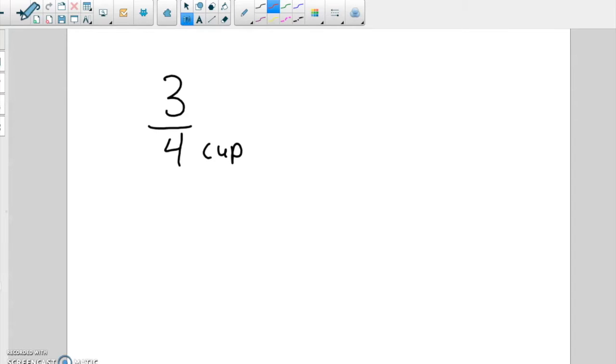Now, if a recipe calls for three-fourths of a cup of flour, and you want to half that, how are you going to find half of three-fourths? Well, you multiply it by one over two. And so what is half of three-fourths? You multiply straight across, and you would be putting in three-eighths of a cup of flour if you find half of the recipe. So as you can see, we're just multiplying straight across.